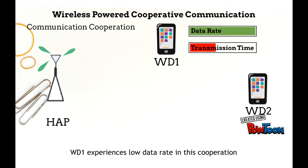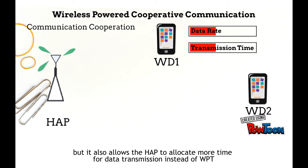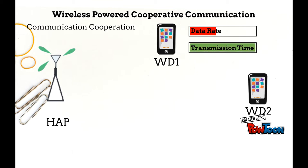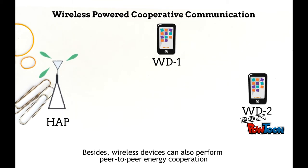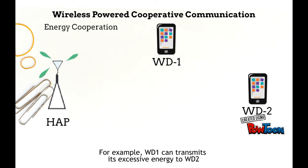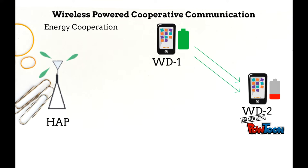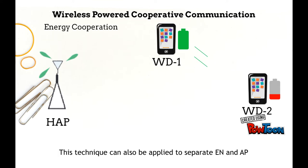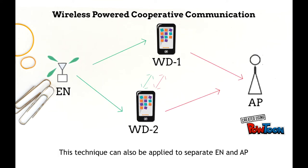WD1 experiences a lower data rate in this cooperation, but it also allows the HAP to allocate more time for data transmission instead of WPT. Besides, wireless devices can also perform peer-to-peer energy cooperation. For example, WD1 can transmit excess energy to WD2. This technique can also be applied to the separate EN and AP configuration.